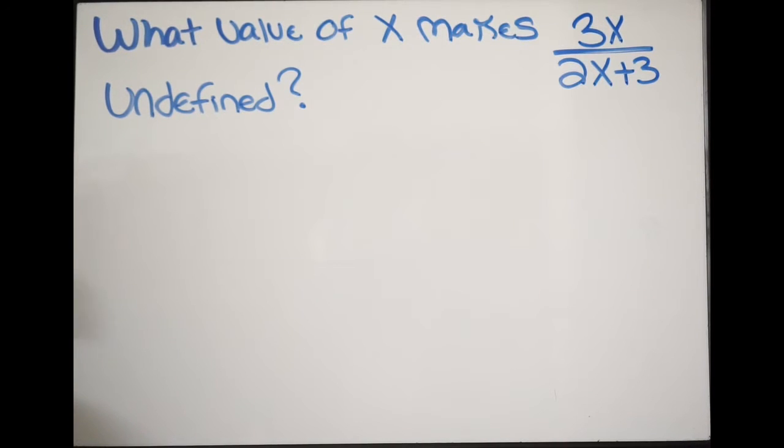In this example, we're being asked what value of x makes the following expression undefined. We know that when something is undefined, that's when we have division by zero. We can't have division by zero because then it'll be undefined.